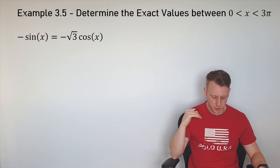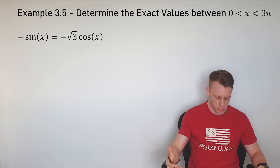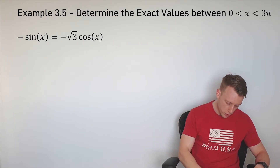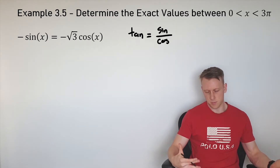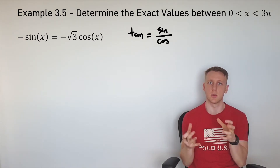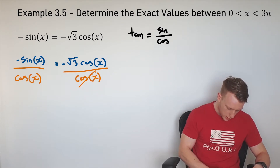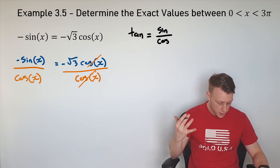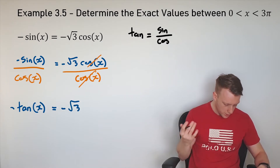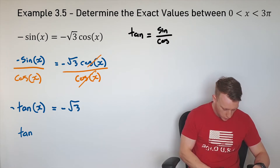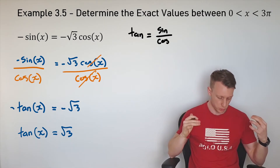I'm calling this example 3.5 — I've got the worked solution ready, so we're just going to zoom through it. You'll see a trig equation where sine equals cos. Recall that tan equals sine divided by cos. We need to simplify the equation so we have a trig function equal to a numerical value. We can divide both sides by cos, which gives us negative sine divided by cos equals negative tan. So negative tan of x equals negative root 3.